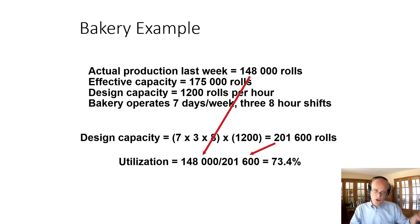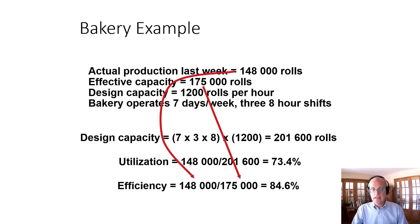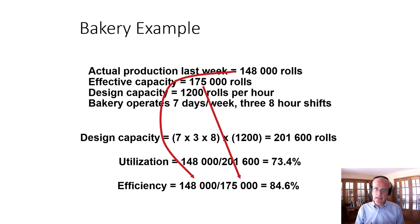We built this bakery with a design capacity of 201,600 rolls, and we're using 73.4% of that. Efficiency is 148,000 ÷ 175,000 — maybe we shut down part of the third shift to clean up or produce something else, so our effective capacity for rolls is 175,000. Our efficiency is 84.6%. Those are pretty good numbers, but I can't tell you absolutely which is better because strategy comes into play. What is our thinking relative to capacity management?